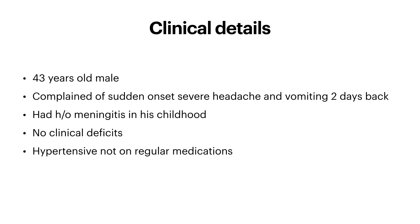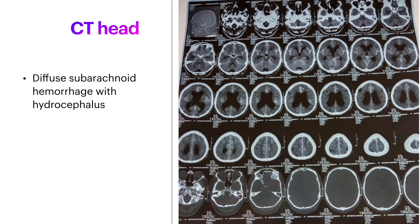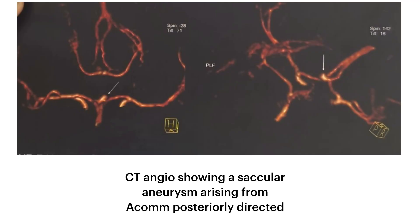Patient was a 40-year-old male who presented with sudden onset severe headache with vomiting. He has a history of meningitis in childhood. Patient was a known hypertensive but on irregular medications.